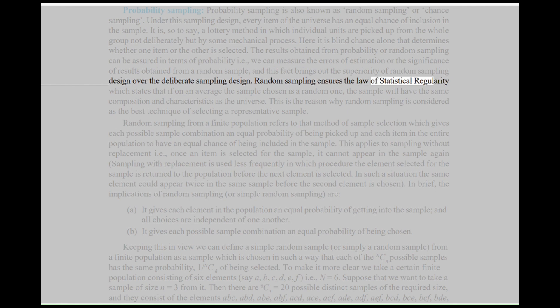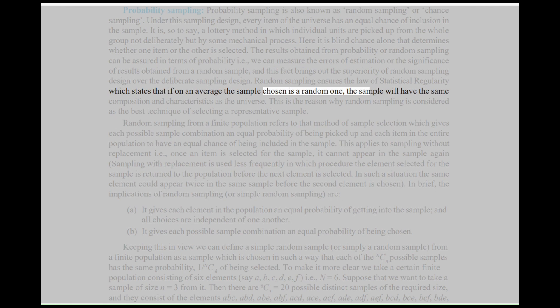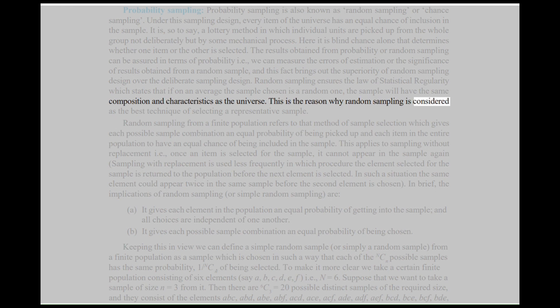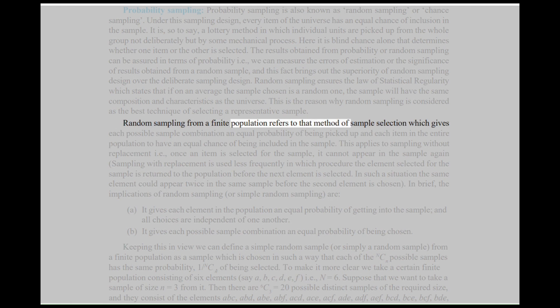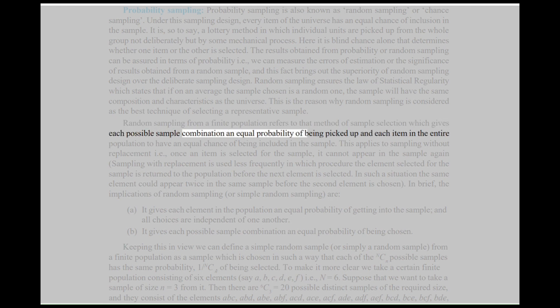Random sampling ensures the law of statistical regularity, which states that if on an average the sample chosen is a random one, the sample will have the same composition and characteristics as the universe. This is the reason why random sampling is considered the best technique of selecting a representative sample. Random sampling from a finite population refers to that method of sample selection which gives each possible sample combination an equal probability of being picked up and each item in the entire population an equal chance of being included in the sample.